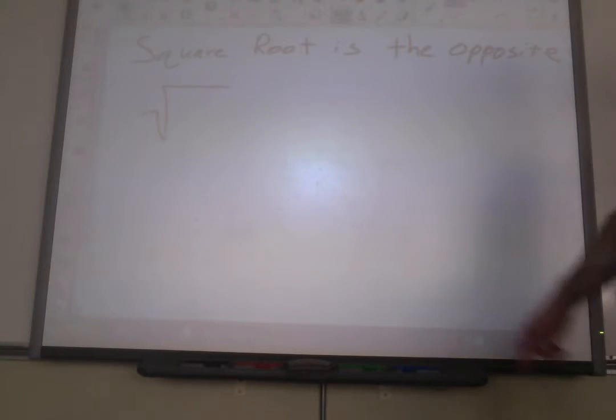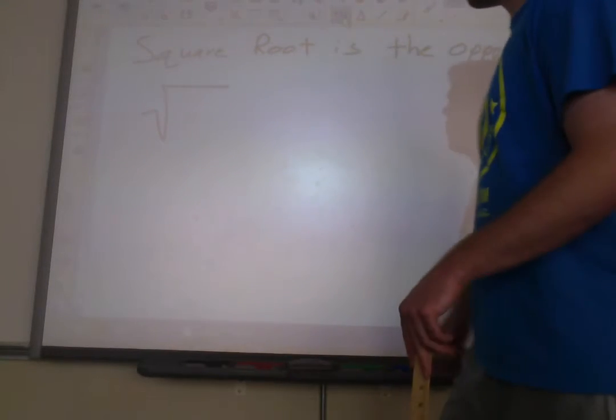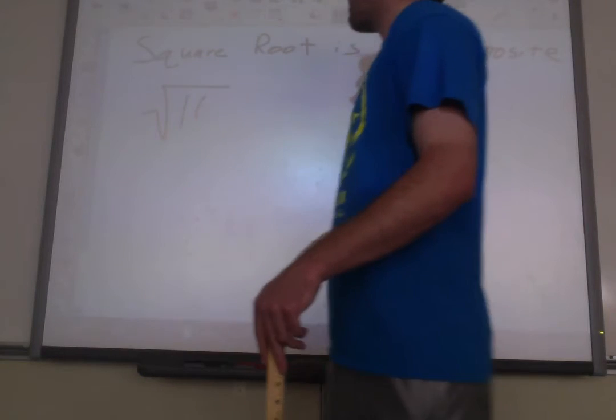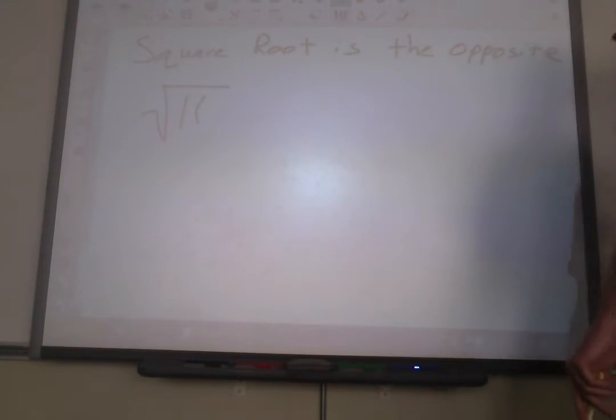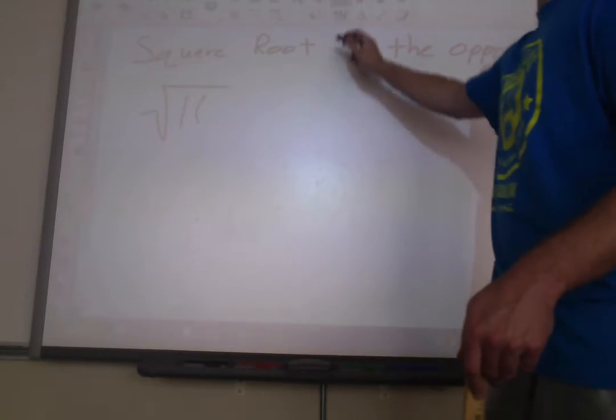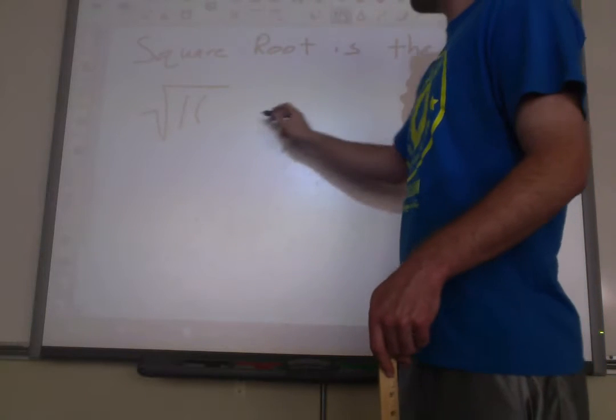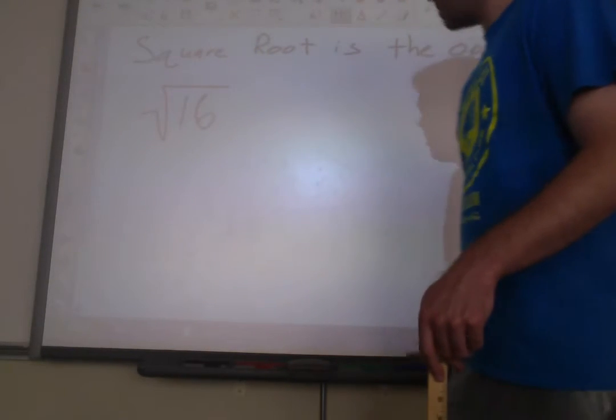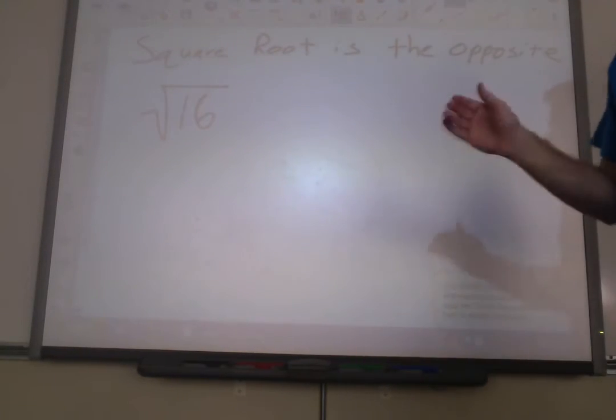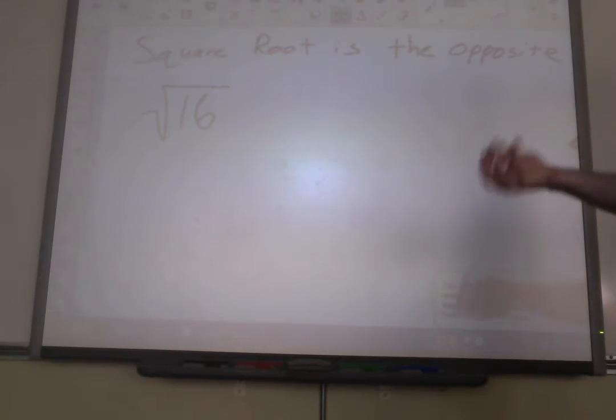Okay, so how does it work? Well, let's say we have the square root of 16. All right, if we have the square root of 16, what that's telling us to do is to ask ourselves, okay, what number could we multiply times itself, and the answer would be 16? So, what number can we take times itself to get 16?